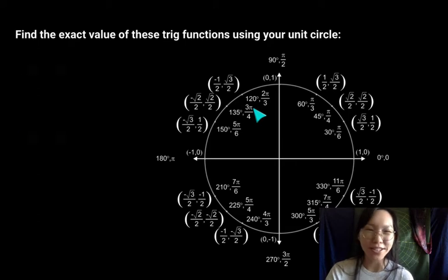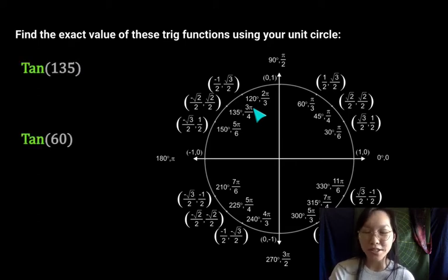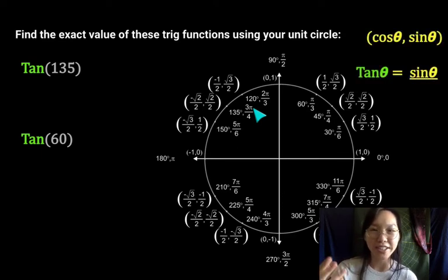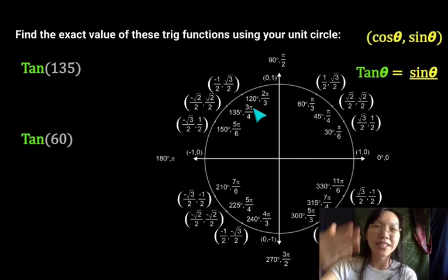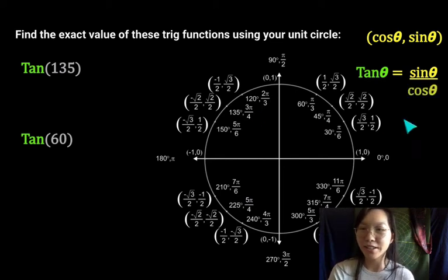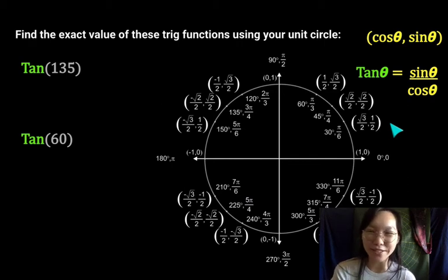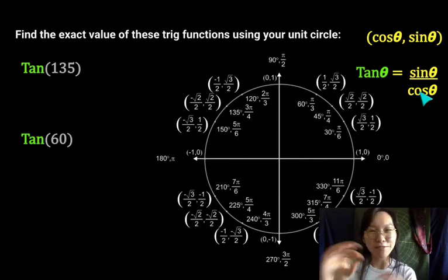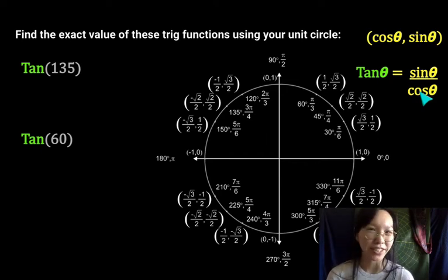So let me show you this situation of when you have tangent. Did you know that tangent is actually a fraction of sine values divided by cosine values? So what we're going to do is we're going to find tangent values by just finding the sine thing and finding the cosine thing and making a fraction out of it and then simplifying it.